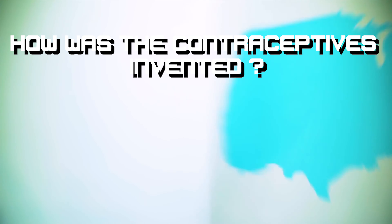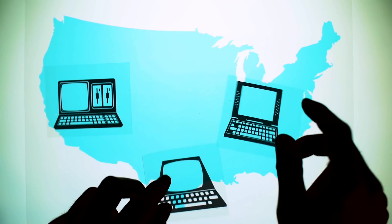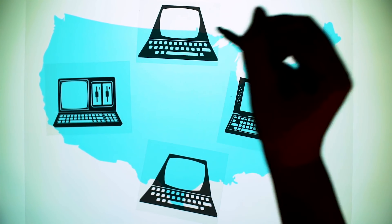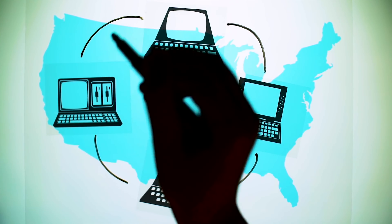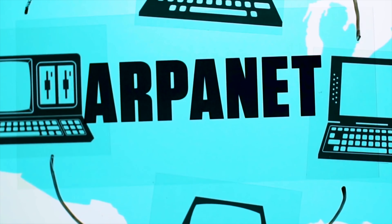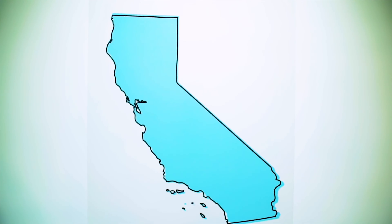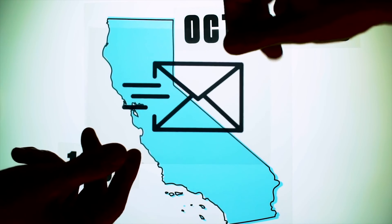How was the internet invented? The global system of interconnected computer networks known as the internet is used by billions of people worldwide. Countless people helped develop it, but the person most often credited with its invention is the computer scientist Lawrence Roberts, in the 1960s.